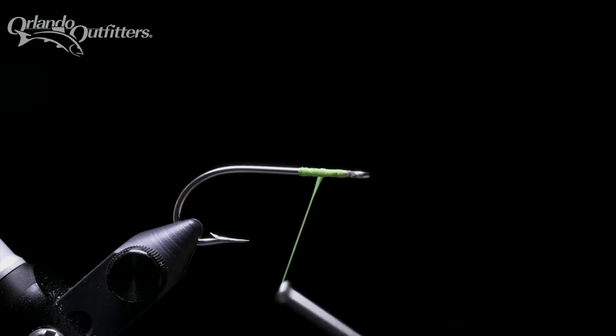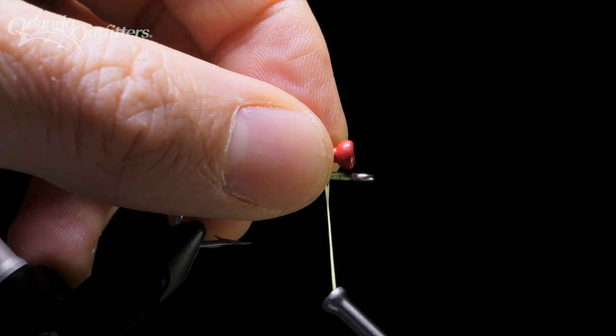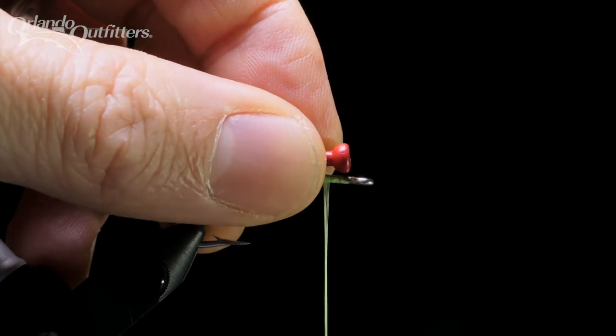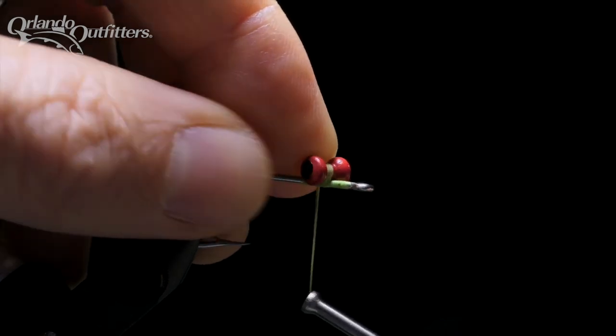Now I'll go through the whole sequence again. First, I need to seat the eyes. Lay the eyes on top of the hook shank parallel to the shank. Place two loose wraps directly around the eyes and tighten down, rotating the eyes off of the hook shank and around.